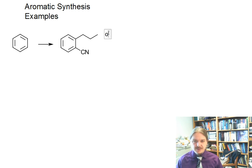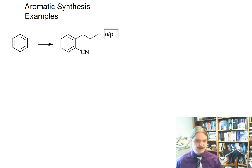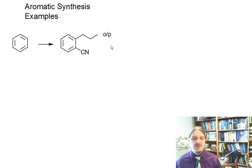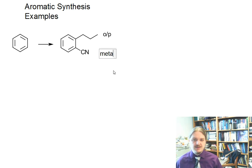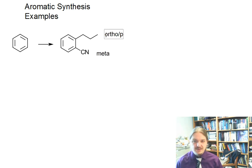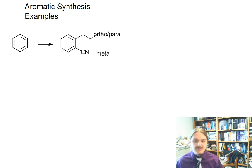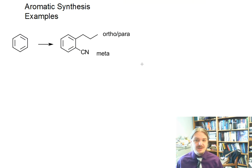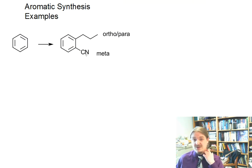The first thing we want to do is look at these two groups and break down their directing powers. The propyl group is an ortho-para director — I always write this out: ortho-para. The nitrile is a meta director, and there's an ortho relationship between them. So we might want to put the propyl group on first, and the nitrile second.